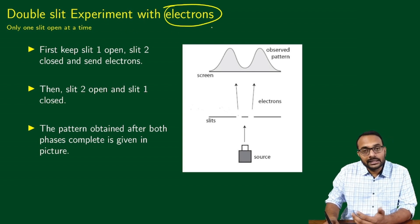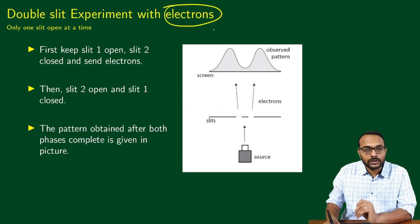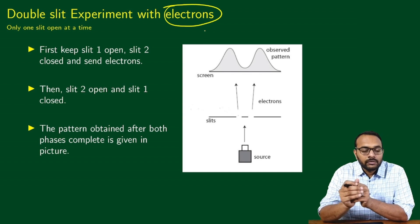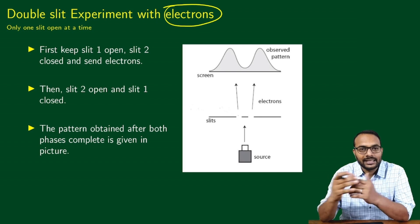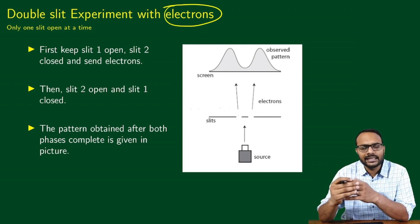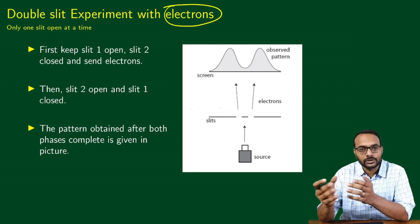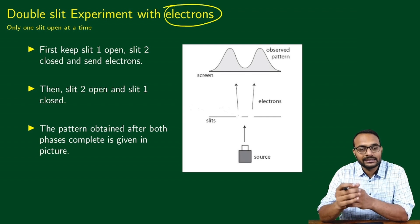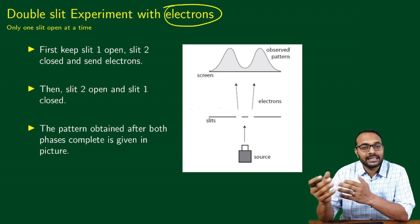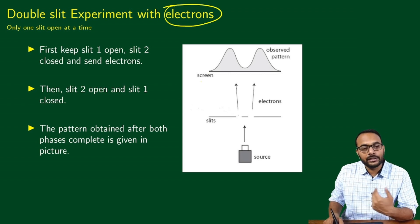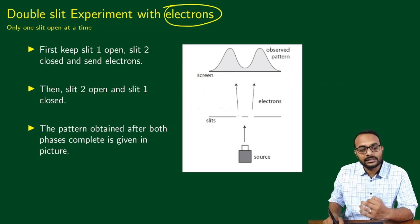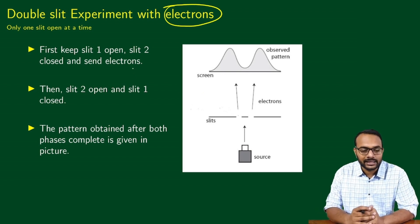Now we carry out the experiment with electrons to understand how they actually behave in such an experimental setup. We don't need any prejudice about electrons. Let's imagine that we know absolutely nothing about electrons — we want to understand what they are and how they behave. We do this by looking at experiments and experimental data.